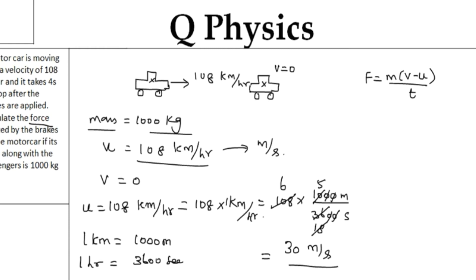Now I got the value in terms of meter per second. Now we are going to calculate the force. F is equal to the mass—mass of the car along with the person is 1000 kilograms, so I am writing 1000.